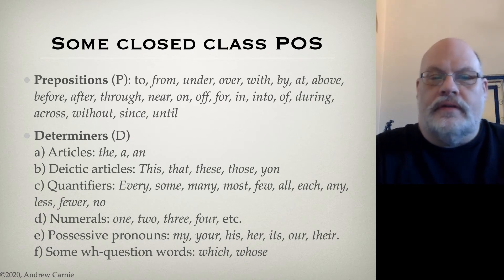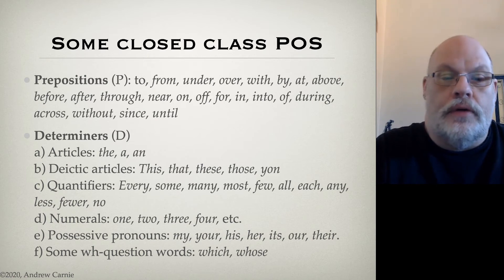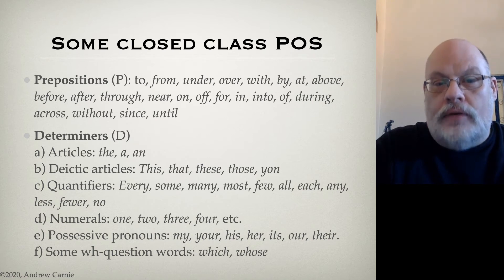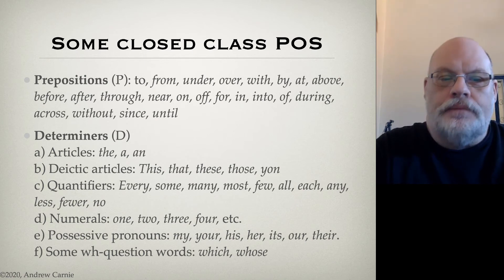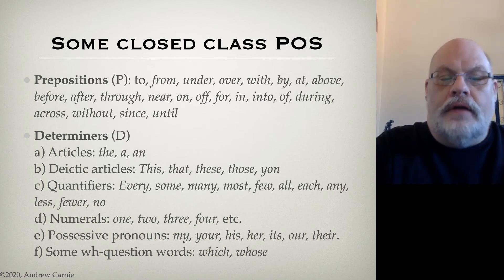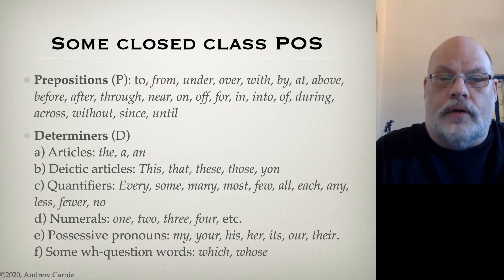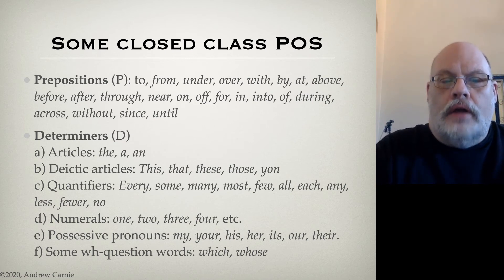Determiners also include quantifiers — things that tell you the quantity of something — like every, some, many, most, few, all, each, any, less, or no. Numerals, when they're used to count a noun: one book, two books, three books, four books, et cetera. Also possessive pronouns: my book, your book, his book. And certain WH question words — called WH question words because they begin with WH — like which and whose, as in "which book" or "whose book." These items all appear in one specific slot within the noun phrase, which is why they're all classified as determiners.